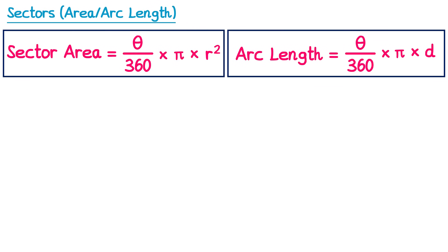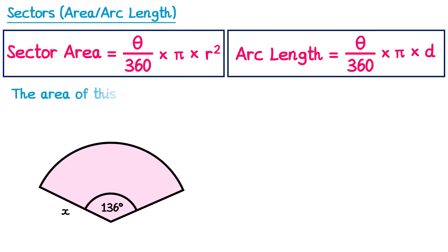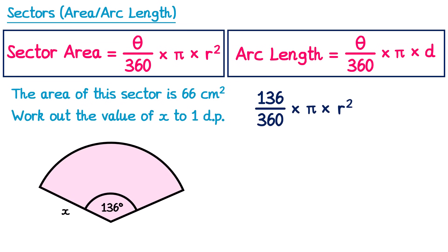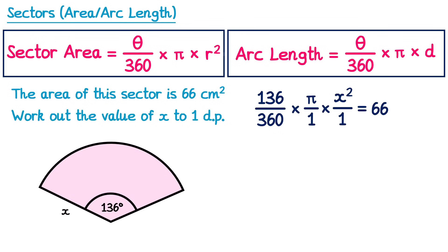Let's try another question in a similar style. This time we have a sector and we're told the area is 66, and we need to work out the value of x, which is the radius. Since we're told the area, let's write out the formula for the area of a sector. This time we do know the angle, which is 136, but we don't know the radius — that's x. So let's replace r with x. Since the area of the sector is 66, this must equal 66, and we have an equation to solve. We're going to rewrite pi and x squared as fractions over 1.